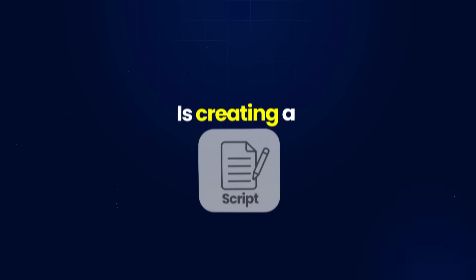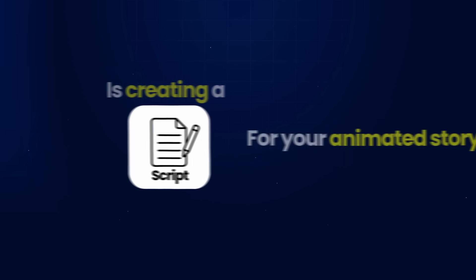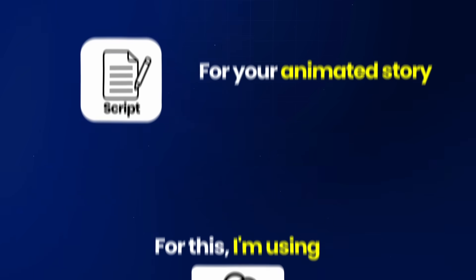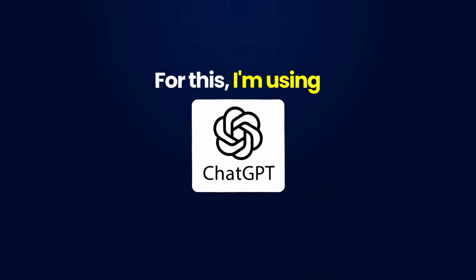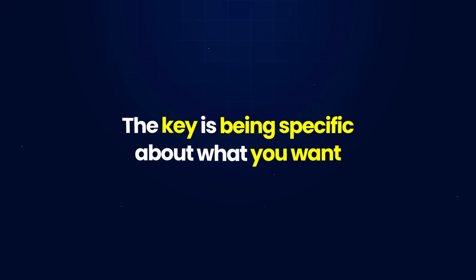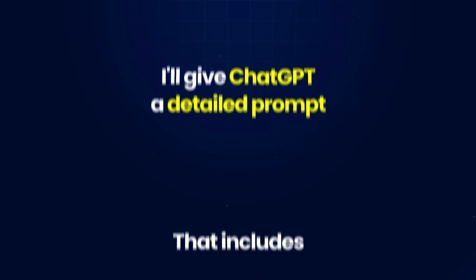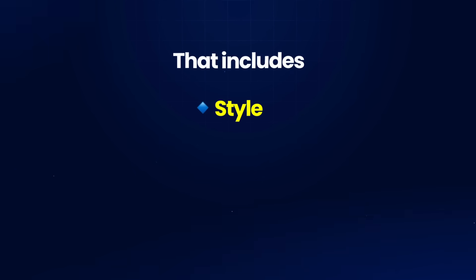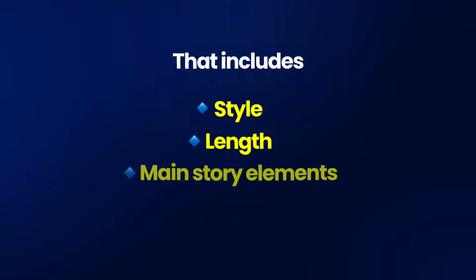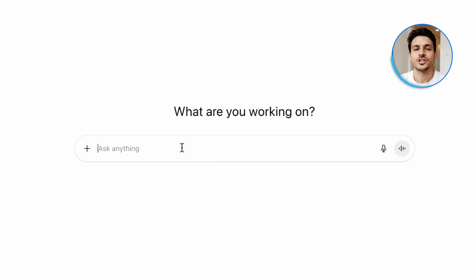The first step is creating a script for your animated story. For this, I'm using ChatGPT, but you can use any AI writing tool you prefer. The key is being specific about what you want. I'll give ChatGPT a detailed prompt that includes the style, length and main story elements. You can also find my prompt in the description below.